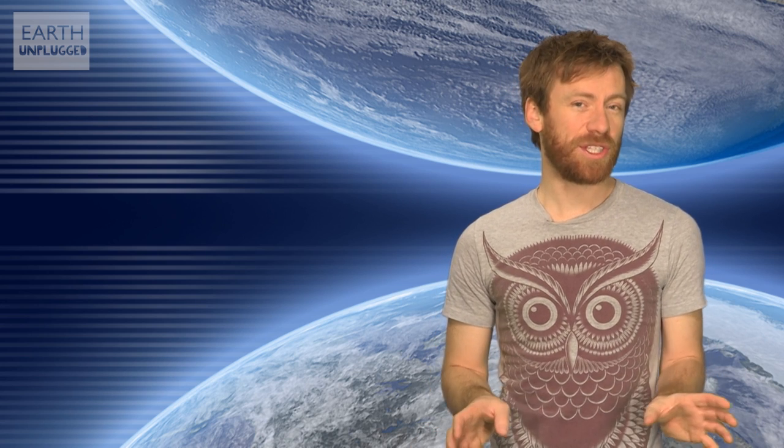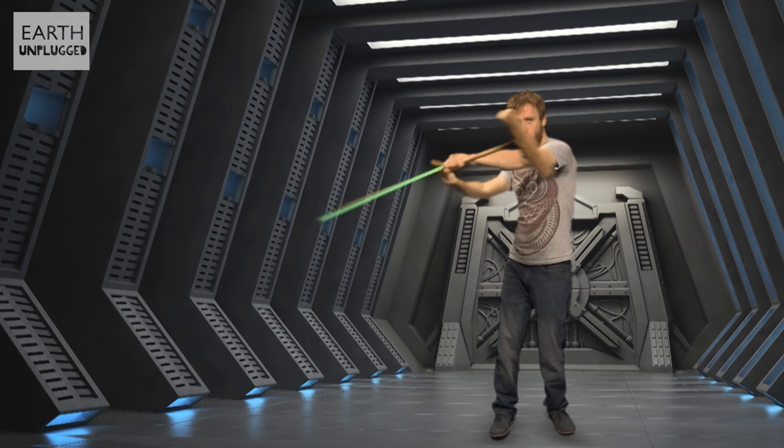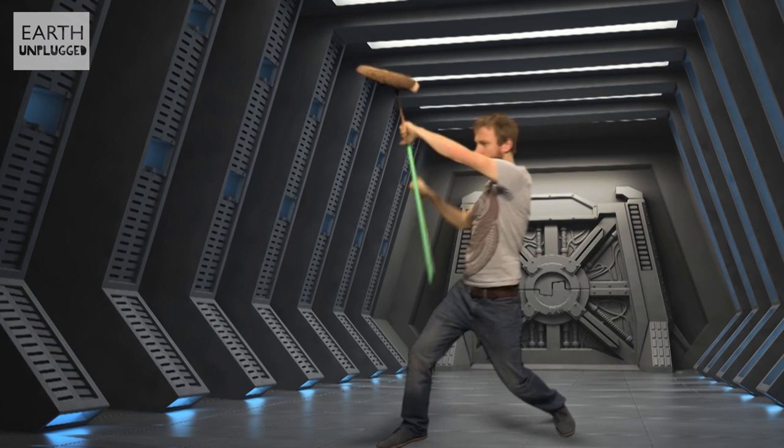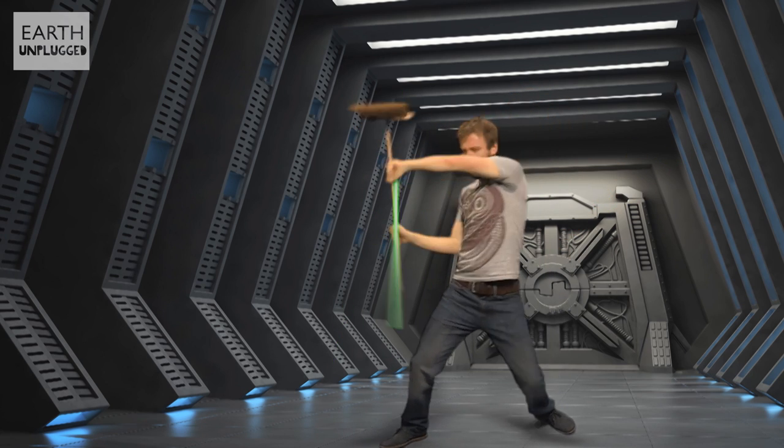A small species of lantern shark has been revealed to warn off predators with what scientists are calling lightsaber-like spines. In his study, Dr. Julian Klass,